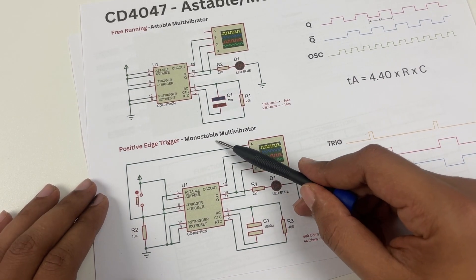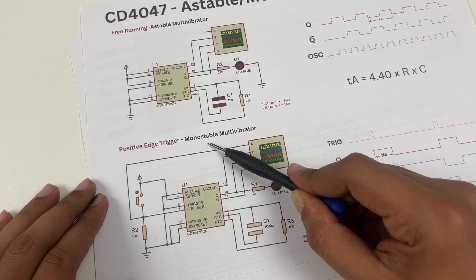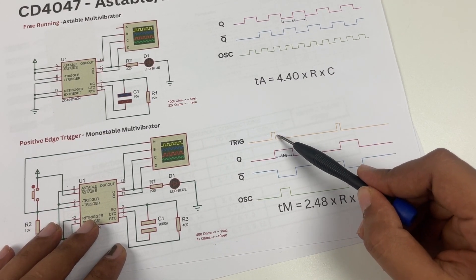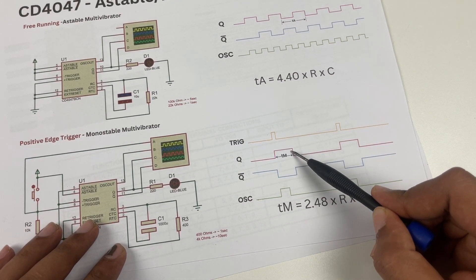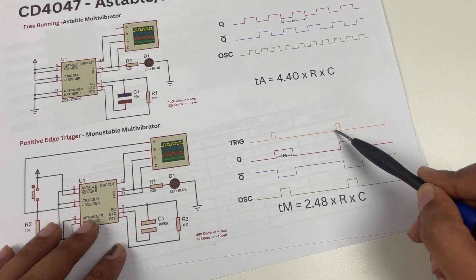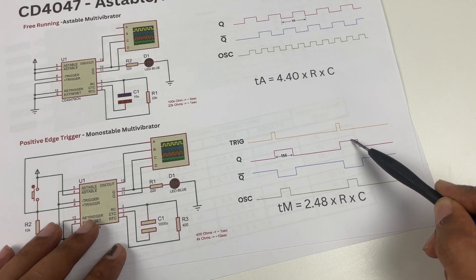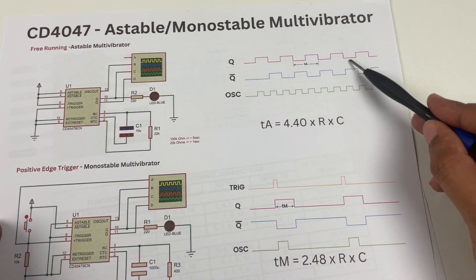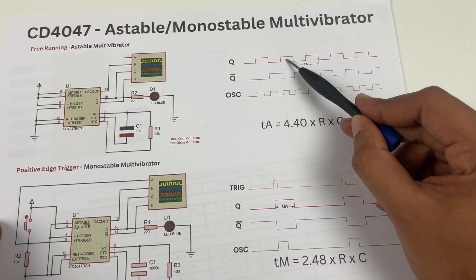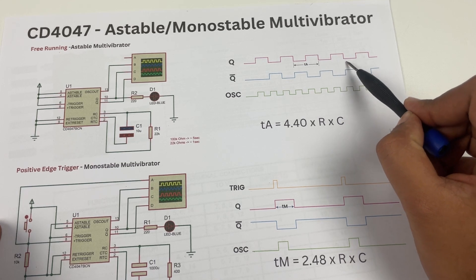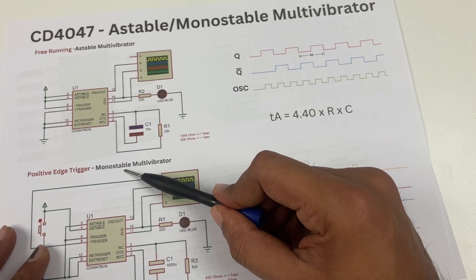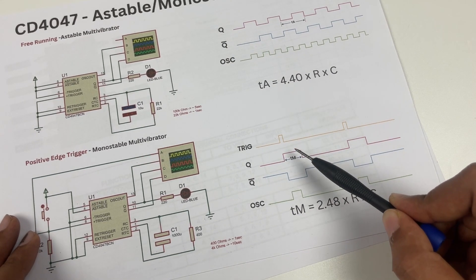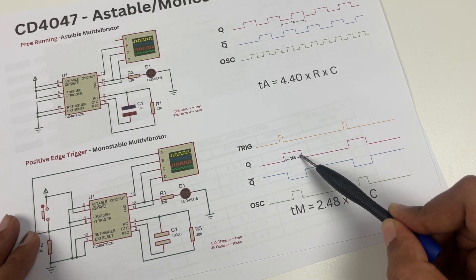Similarly, for a monostable multivibrator as the name suggests there is one stable state. Whenever the trigger pin is activated, the output goes high for one stable state and then goes off. Again when a trigger is given there is one stable state and it continues. In monostable multivibrator, whenever a trigger is given it goes up and stays on for a particular duration.